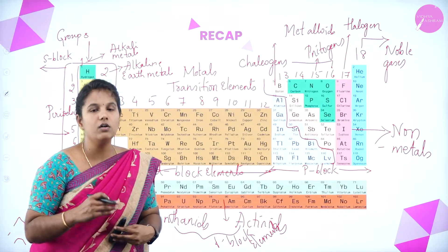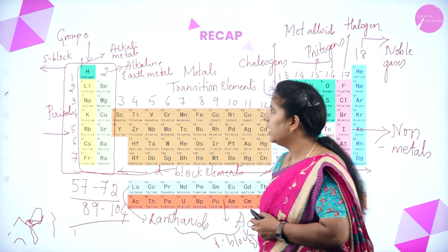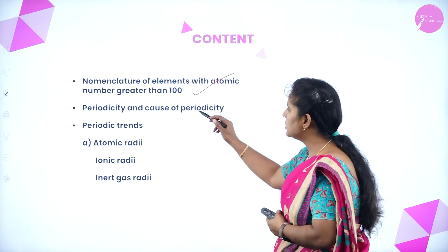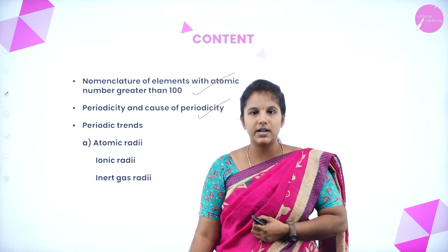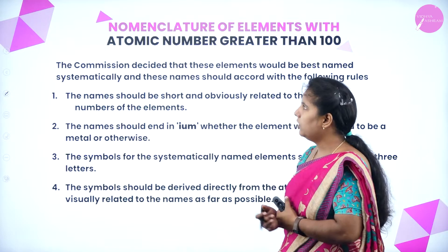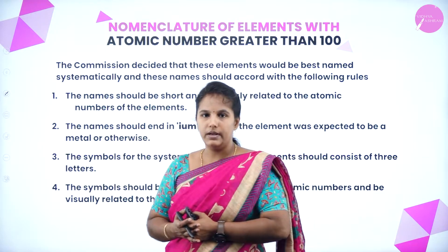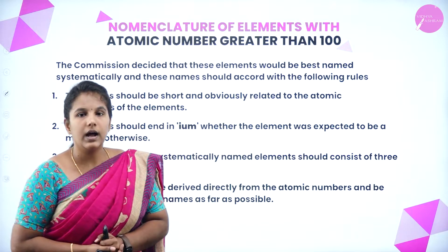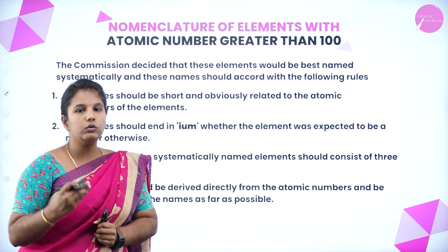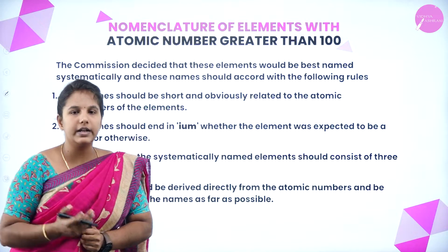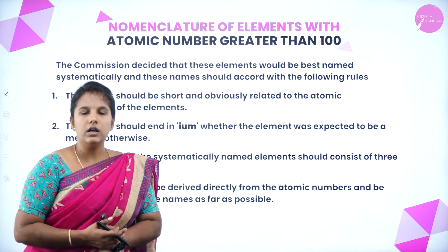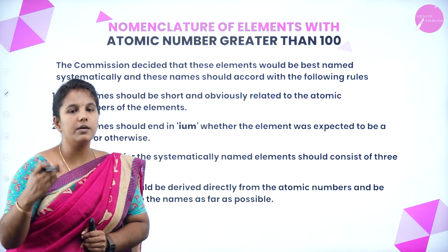Now let us move on to the nomenclature of elements with atomic numbers greater than 100, and we will also discuss periodic trends, especially atomic radii. The IUPAC system has made certain rules to name elements with atomic numbers greater than 100. Let's see the rules.